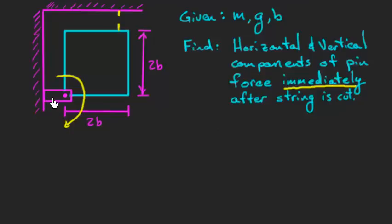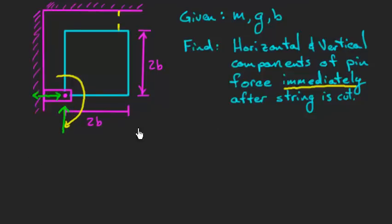In a previous problem with the exact same setup, I asked whether the pin was pushing right or left, and whether the pin force was equal to, greater than, or less than the weight. Now we're going to find the actual forces in terms of mass, acceleration due to gravity, and the size of the plate.